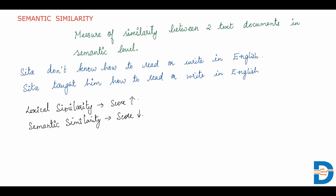In certain scenarios we try to find lexical similarity, and in certain applications we try to find semantic similarity. For example, if you try to do a plagiarism check — to find plagiarism between two documents — you will find the lexical similarity, just checking whether content has been copied from anywhere. But if you do sentiment analysis, where you need to look into the actual meaning of the sentence, that is where you will look for semantic similarity.